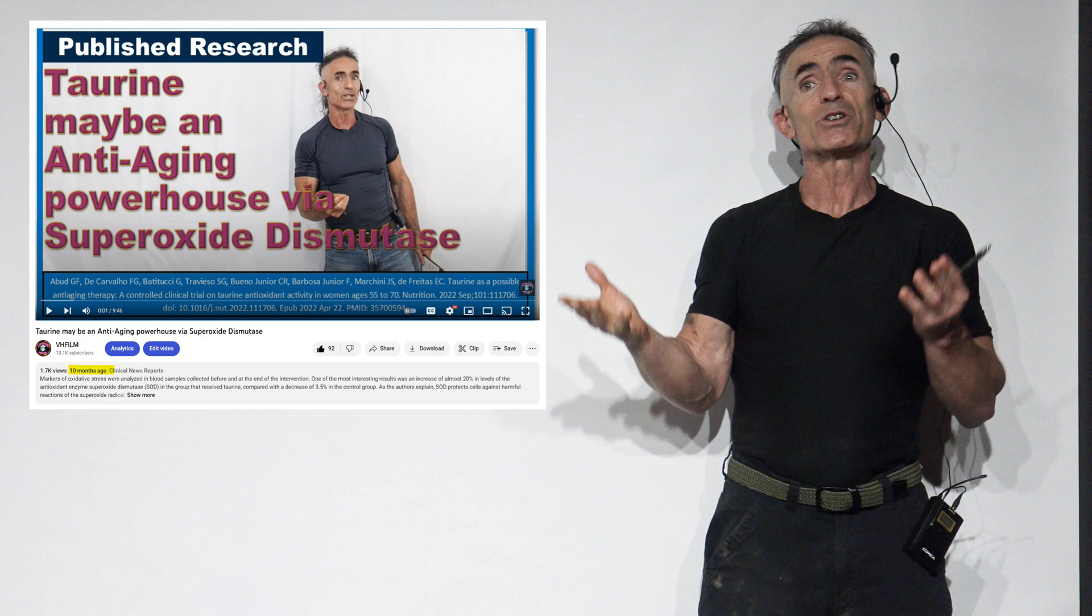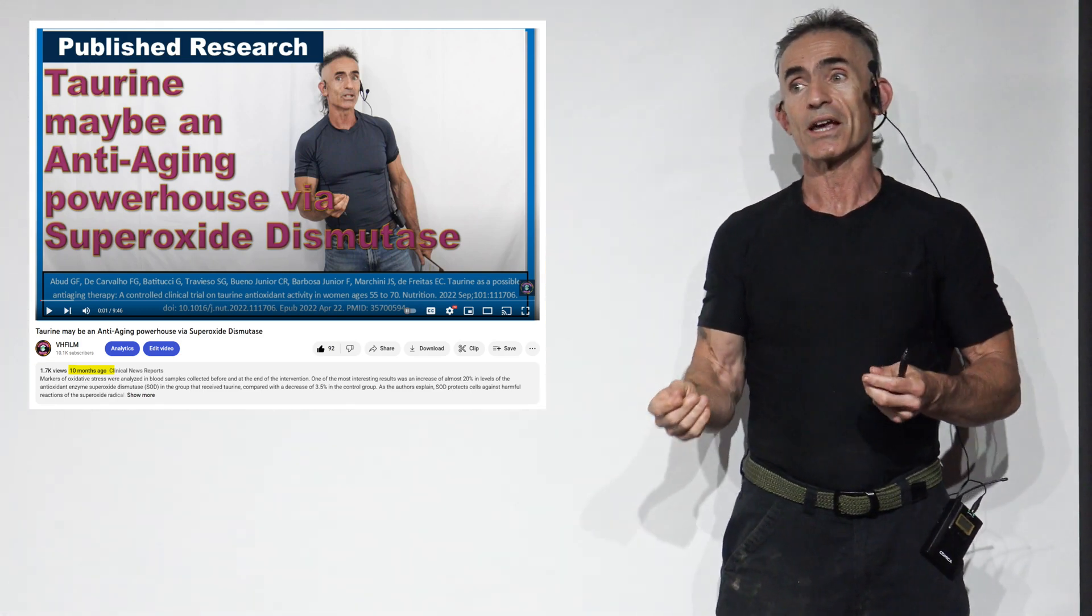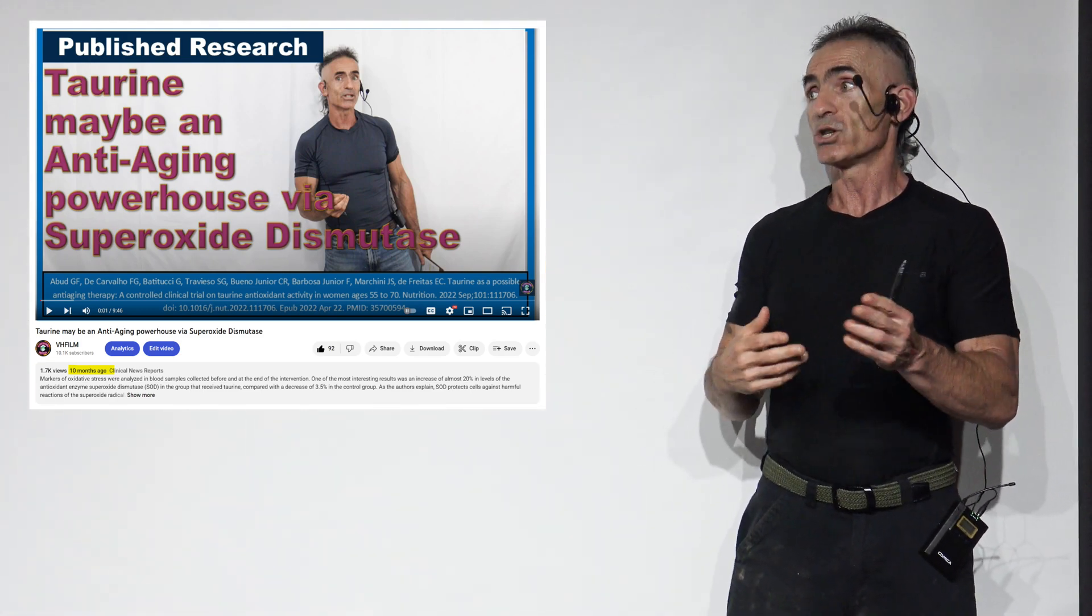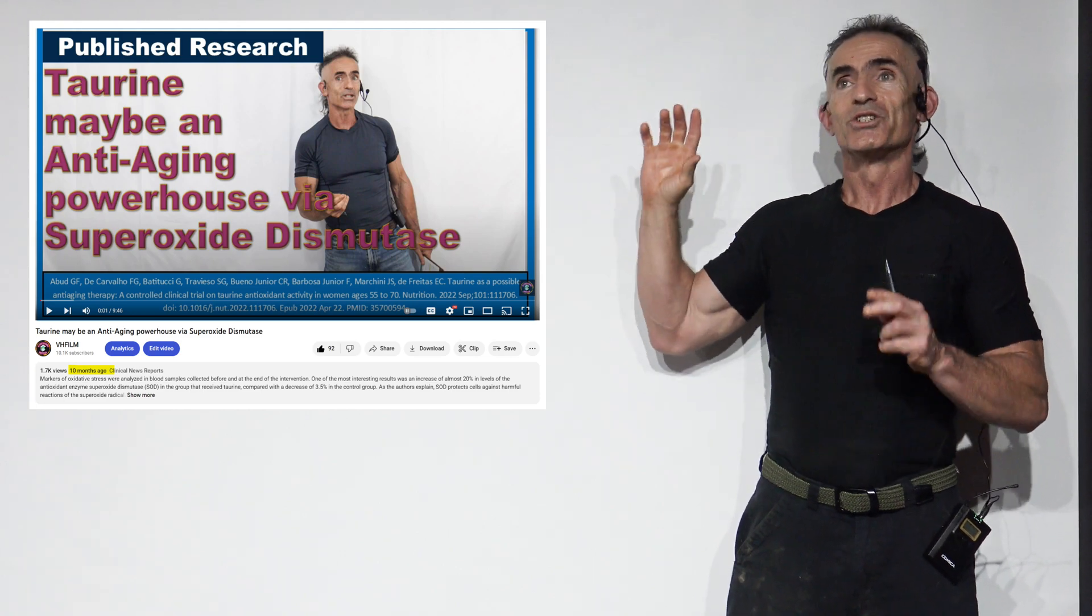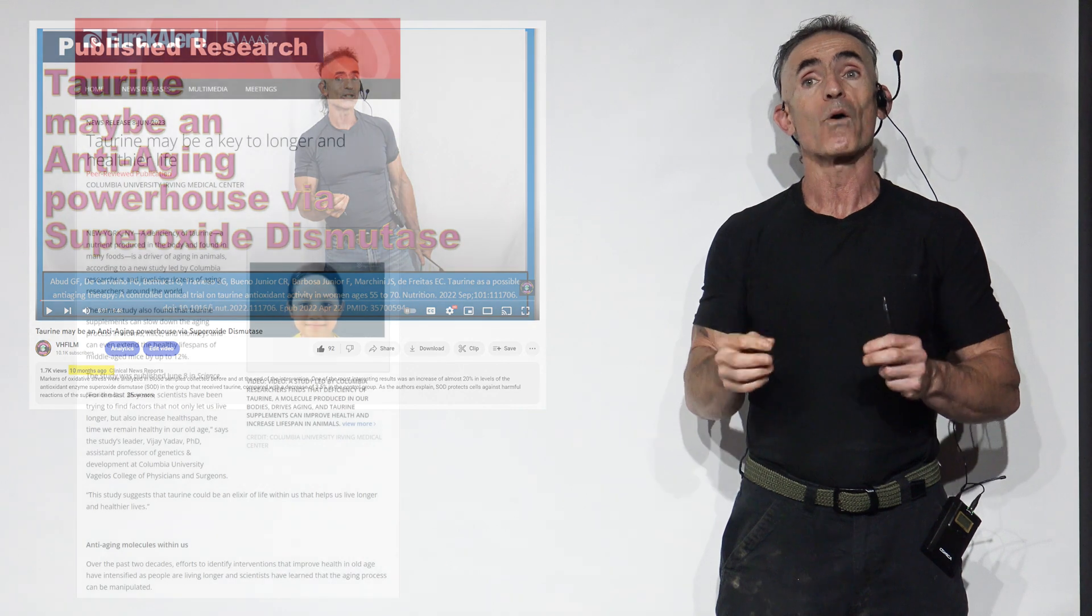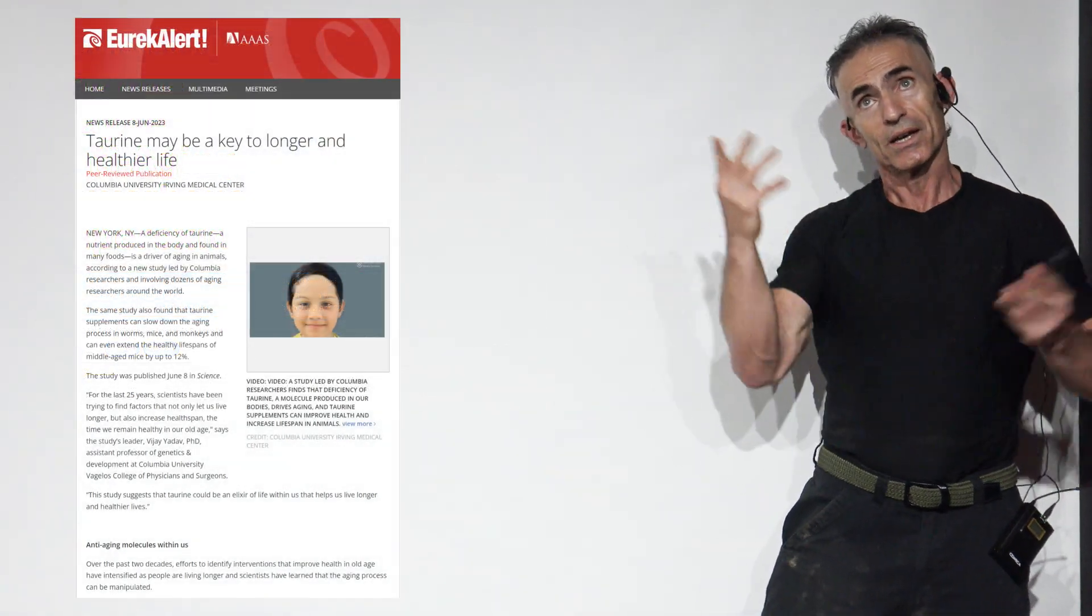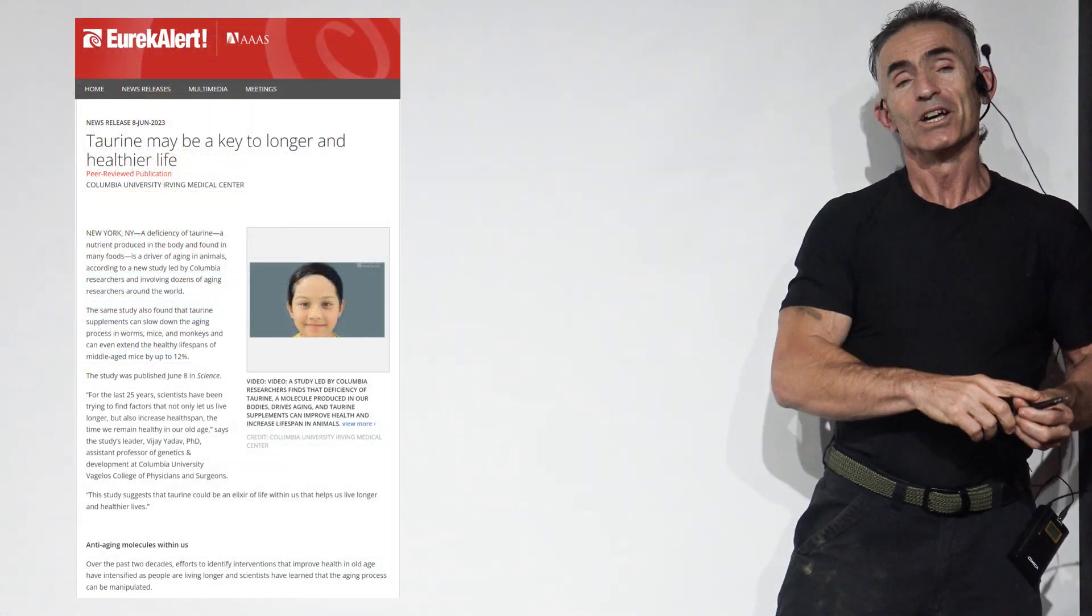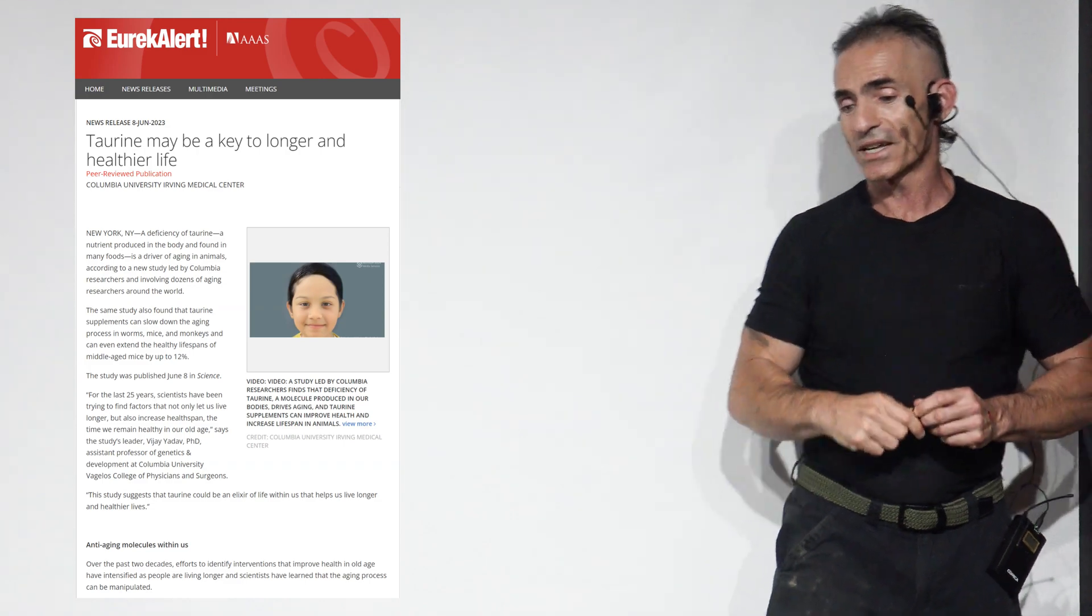So you have a really interesting dichotomy between glycine and N-acetylcysteine with glutathione, and taurine with SOD. It's really clear in the field in regards to these very powerful healthy aging nutrients. So without further ado, let's get right into the study.